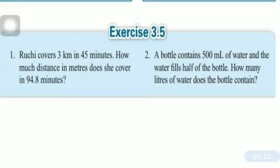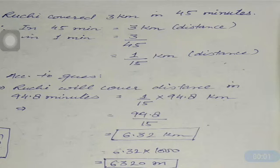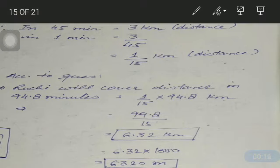According to the question, Ruchi covered three kilometers in 45 minutes. So in 45 minutes she covered three kilometers in distance. We can calculate that in one minute she covered 3/45 kilometers, or after simplifying, 1/15 kilometers.